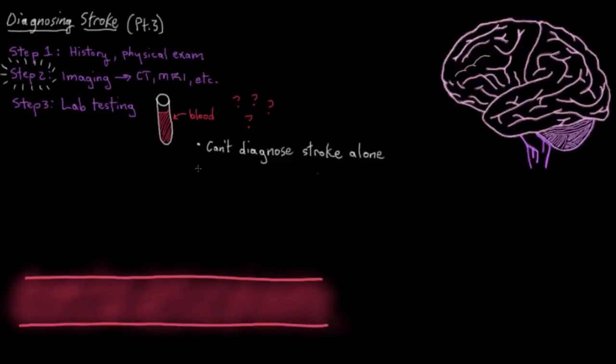But what they can do is look for conditions that might be the cause of the stroke. They're also really helpful in excluding things that may be mimicking a stroke, like abnormally low blood sugar levels, which can sometimes cause symptoms that look like stroke symptoms.